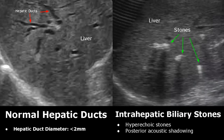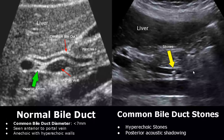Intrahepatic biliary stones will appear hyperechoic with posterior shadowing. In this image there are four stones within the hepatic bile ducts. In this next image we have a stone in the common bile duct — it also has posterior acoustic shadowing.